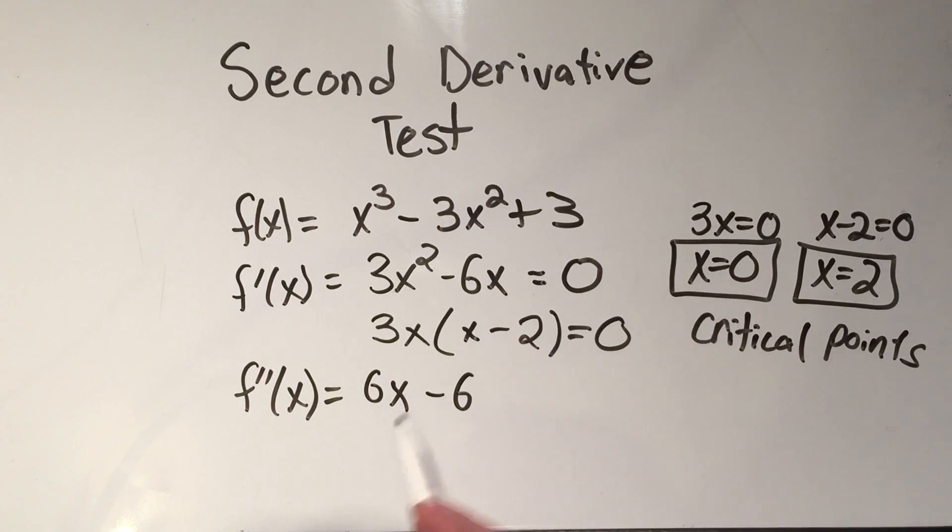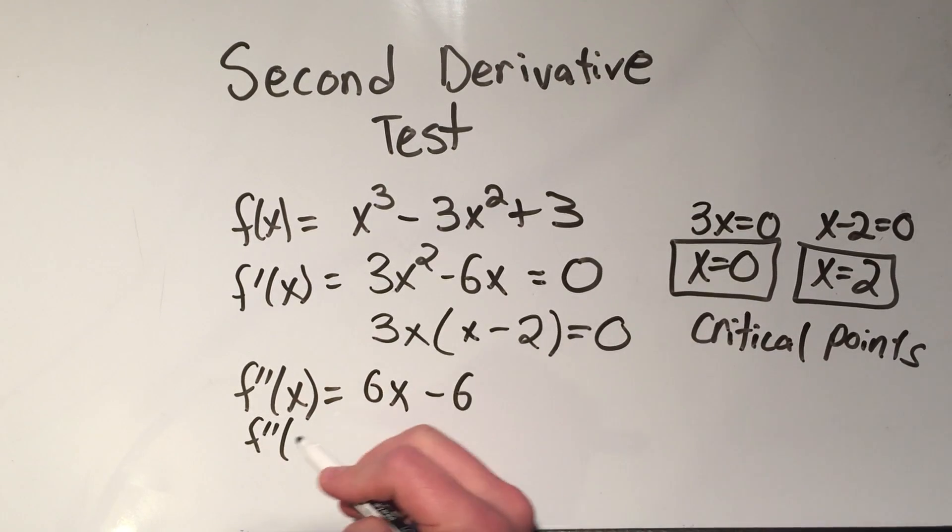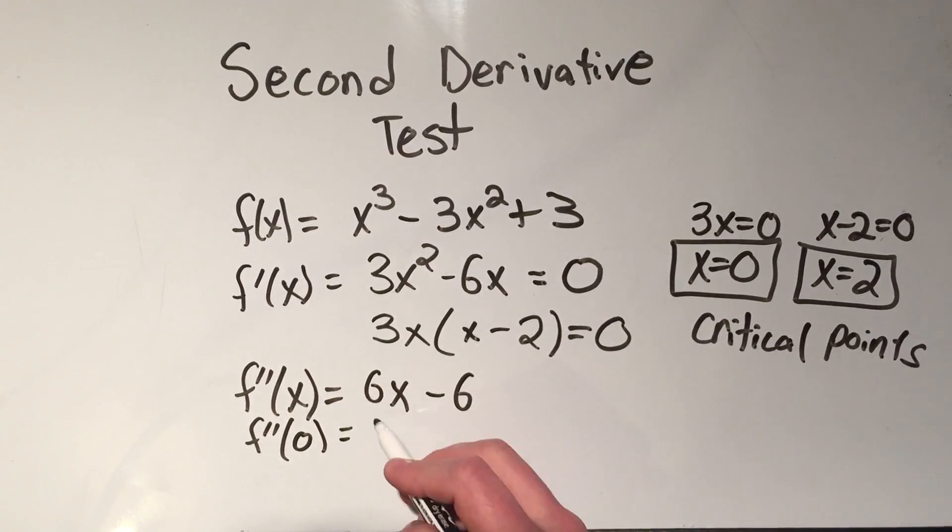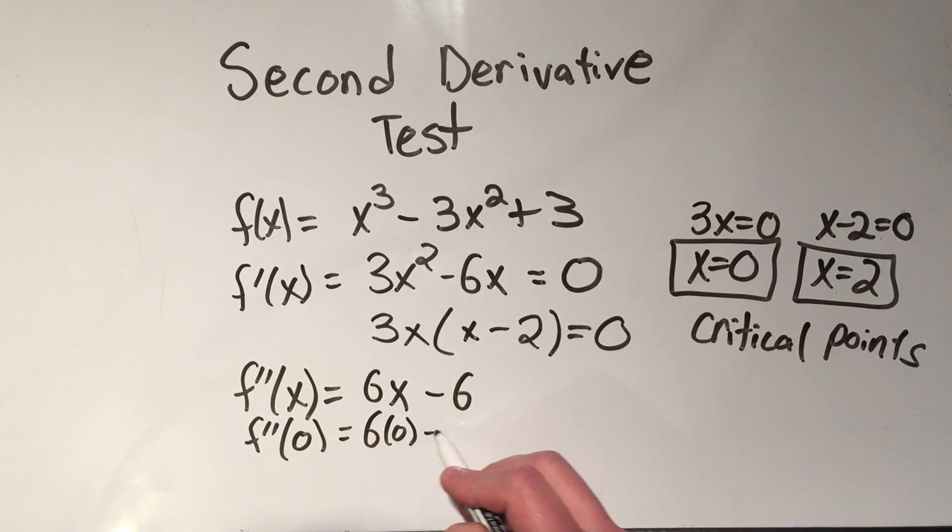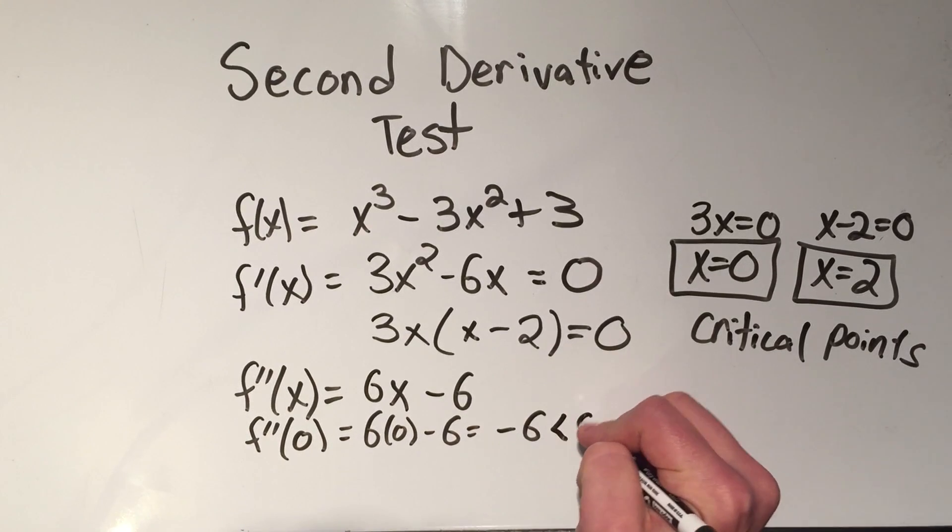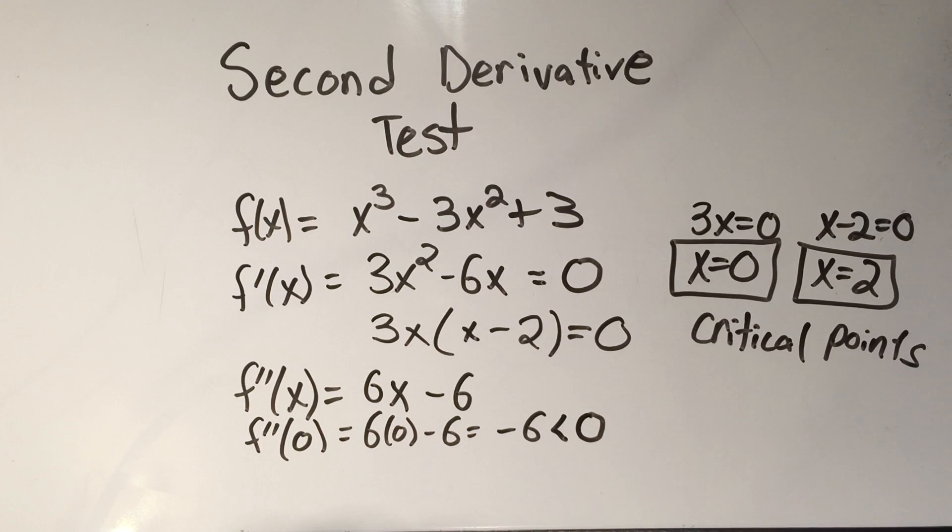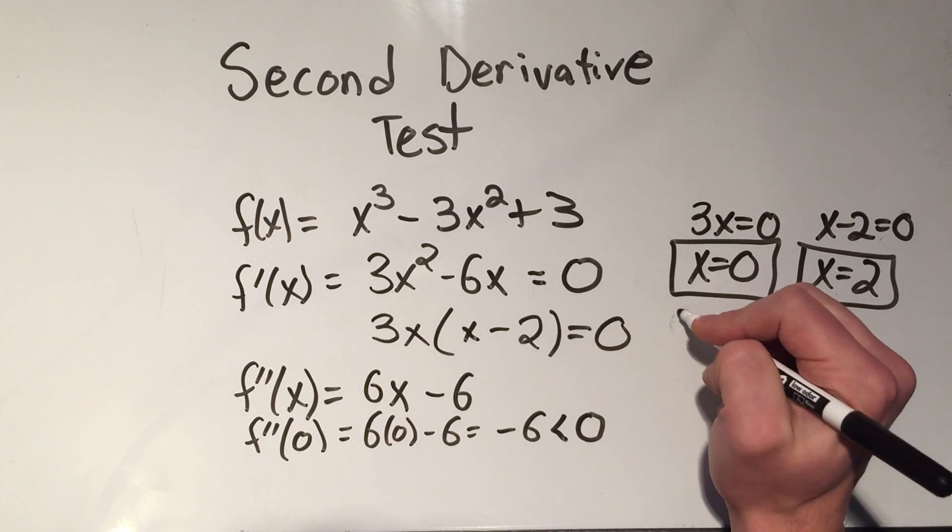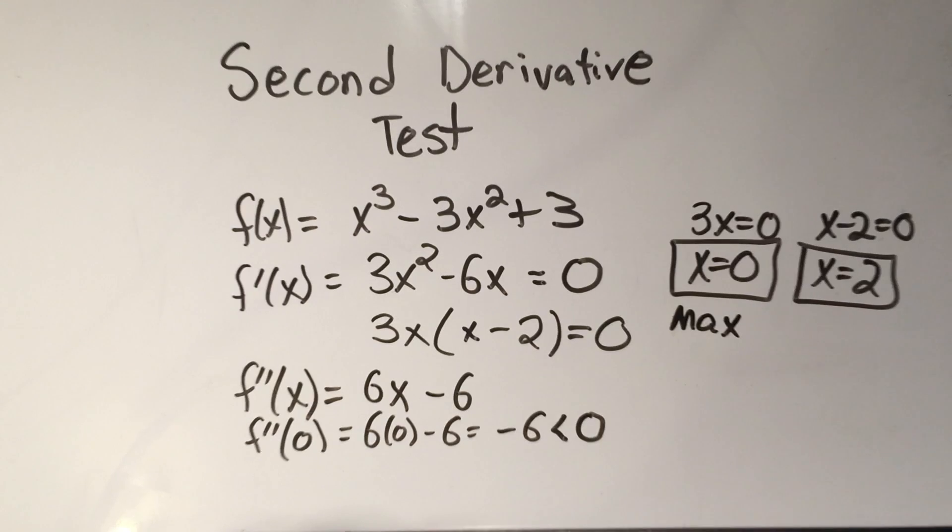I plug in my two points into the second derivative. So I'll do my second derivative evaluated at 0. That's 6 times 0 minus 6. That's minus 6. And minus 6 is less than 0, or minus 6 is negative. That means 0 gives me a max.